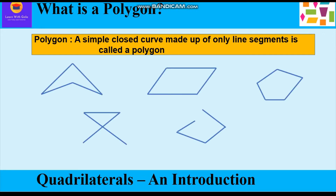Now there are a few figures given. Can you identify which figure is a polygon and which is not? The first three are polygons as they are simple, closed, and made up of line segments. The next two figures are not polygons because they are not closed — though they are made up of line segments, they are not closed, so they are not polygons.